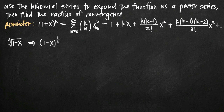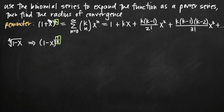The binomial series is just a particular kind of power series, and in this problem it's going to help us find a power series representation of 1 minus x raised to the 1/4 power. What we want to notice first is that the format of our problem is similar to the binomial series format. We have a value for k of 1/4, but in our problem we have negative x instead of positive x, so we're going to have to adapt the binomial series to fit our problem.